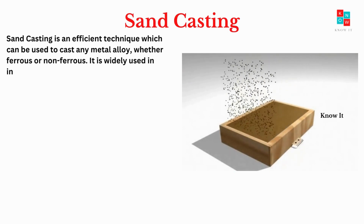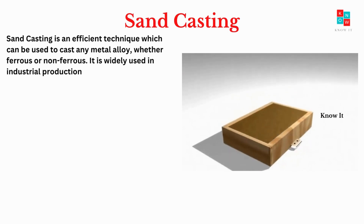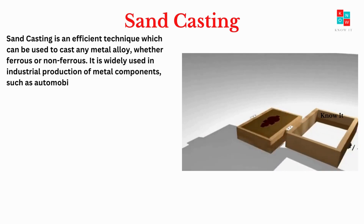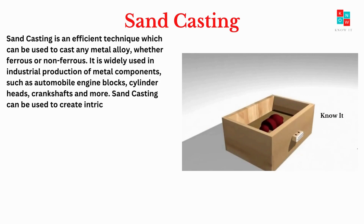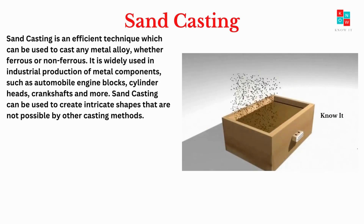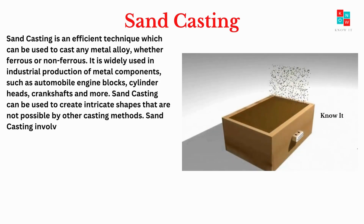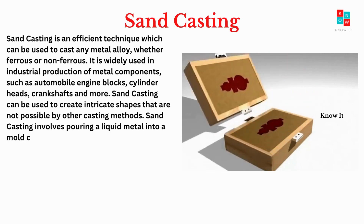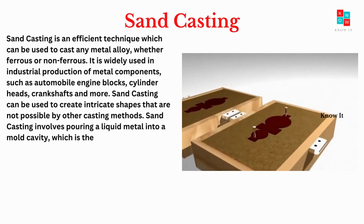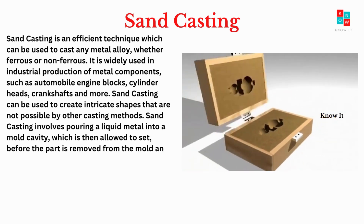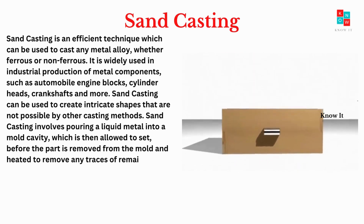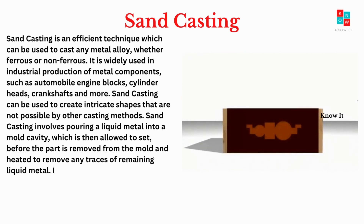It is widely used in industrial production of metal components, such as automobile engine blocks, cylinder heads, crankshafts and more. Sand casting can be used to create intricate shapes that are not possible by other casting methods. Sand casting involves pouring a liquid metal into a mold cavity, which is then allowed to set, before the part is removed from the mold and heated to remove any traces of remaining liquid metal.